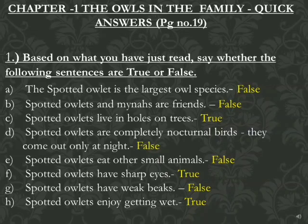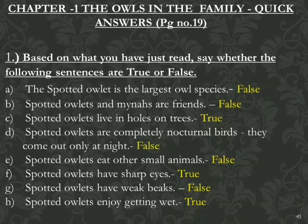Number 1. Based on what you have just read, say whether the following sentences are true or false. Number A: The spotted owlet is the largest owl species. Answer: False. Number B: The spotted owlets and minors are friends. Answer: False. Number C: Spotted owlets live in holes on trees. Answer: True.